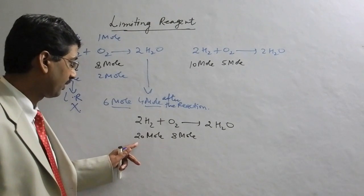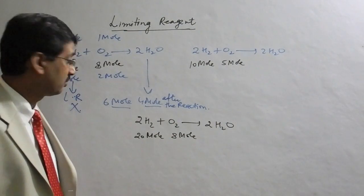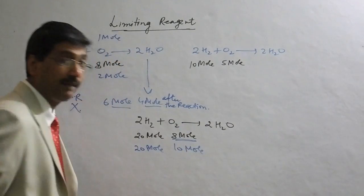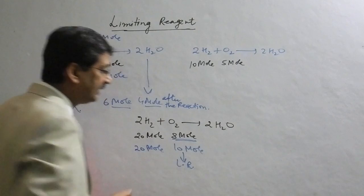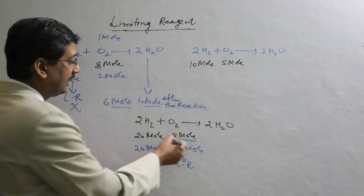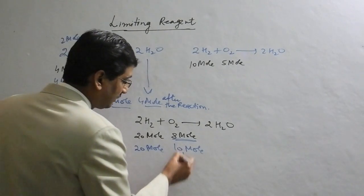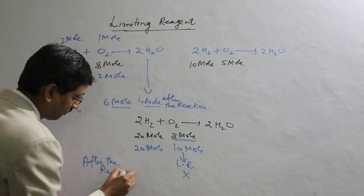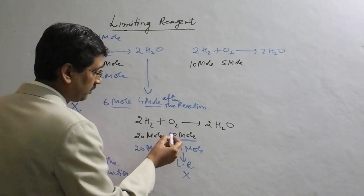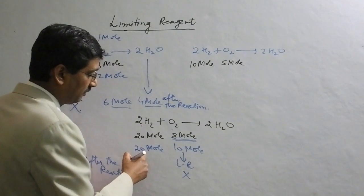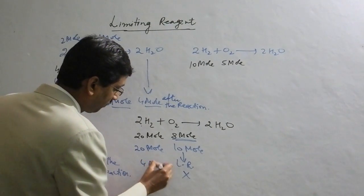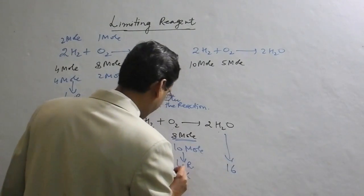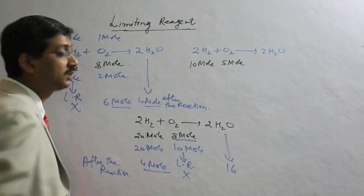In the second case we have 20 mol of H2 and 8 mol of O2. For 20 mol of H2 we need 10 mol of O2, but we only have 8 mol. So oxygen is the limiting reagent and all calculations are based on oxygen. 8 mol of O2 reacts with 16 mol of H2, leaving 4 mol of H2 remaining. 16 mol of water is formed. In this case, the limiting reagent is oxygen.